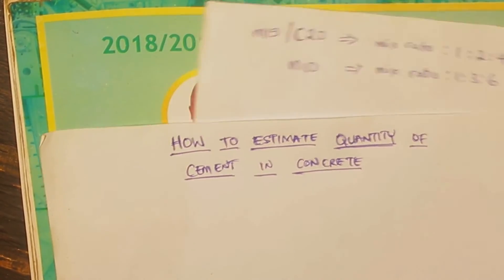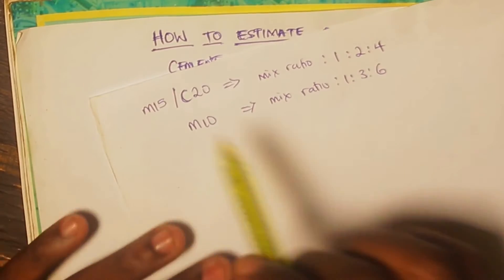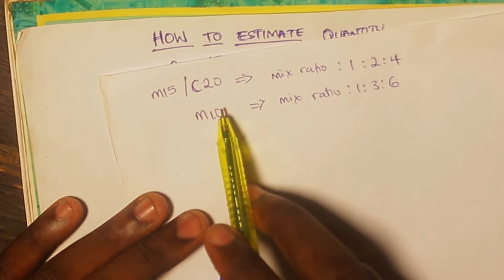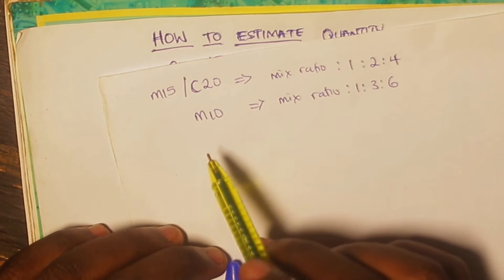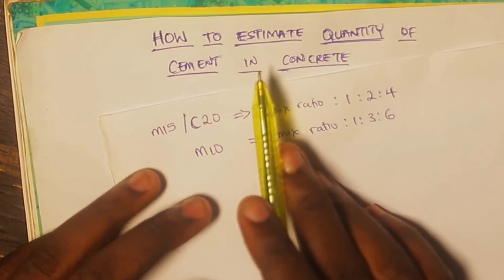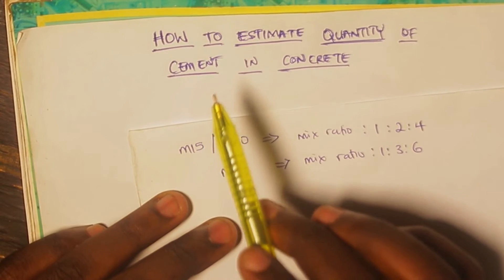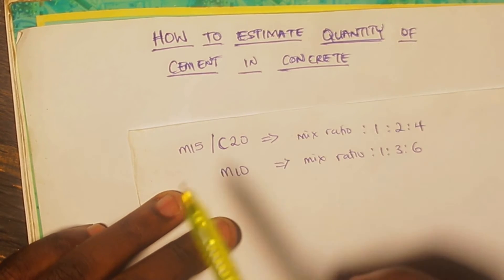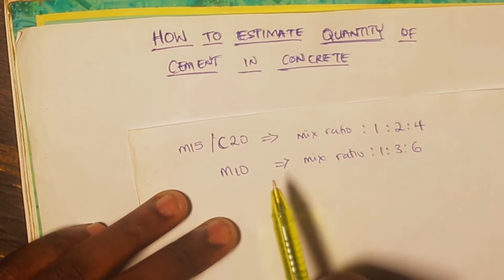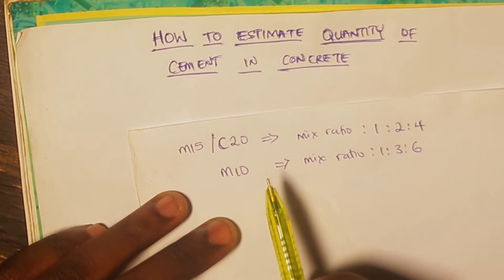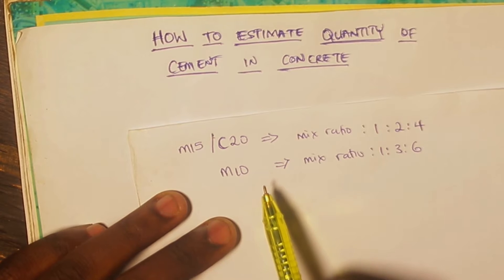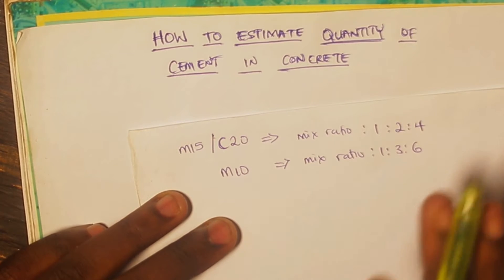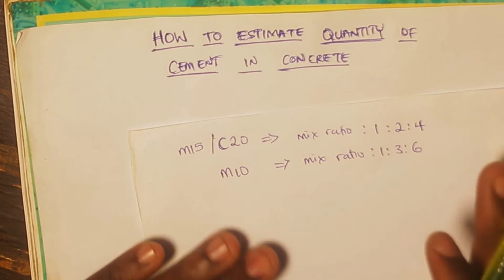Before I move ahead, there's something very important we need to look at. We have M15, C20, and M10 — these are simply concrete grades. I've actually made a short video on concrete grade. In order to calculate the quantity of cement in a particular concrete, you need to first understand what grade of concrete is being used in that construction. In most cases, the description in your bill of quantities or specification given to you as a contractor or site engineer will state the grade of concrete. We have two different types of concrete grade: the M grade and the C grade.